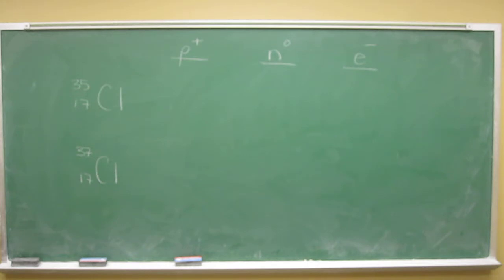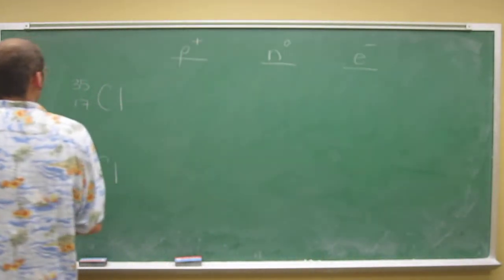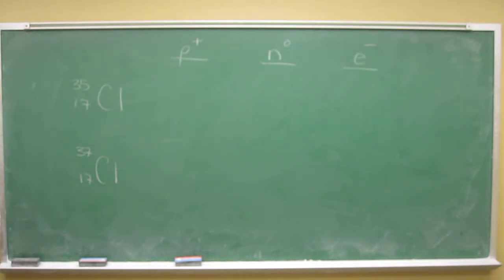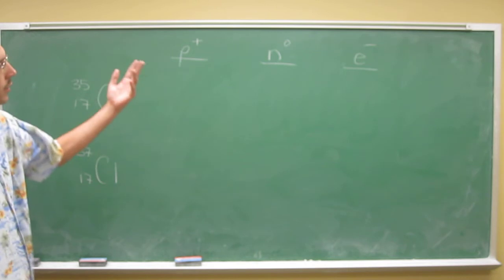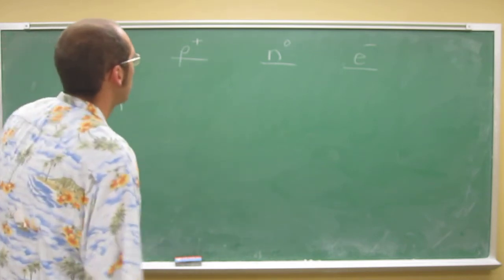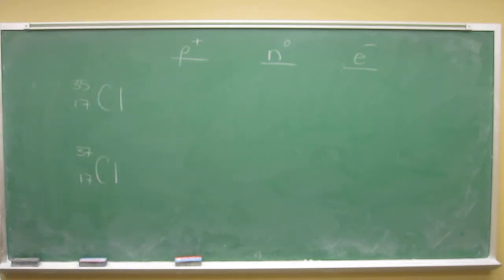What do we have here? We've got the two major isotopes of chlorine, chlorine-35 and chlorine-37. They want you to calculate the protons, neutrons, and electrons of each of these.